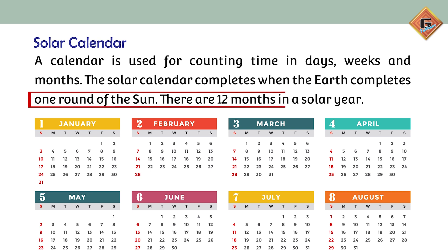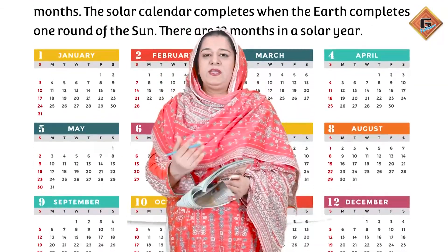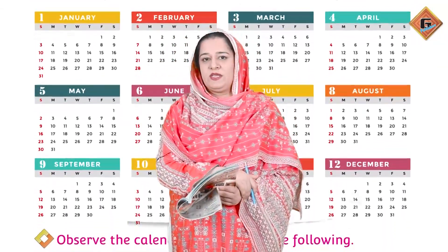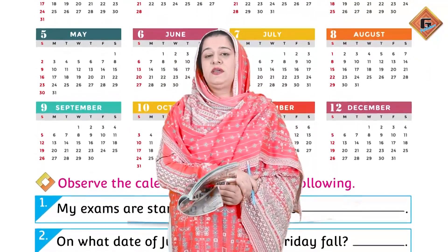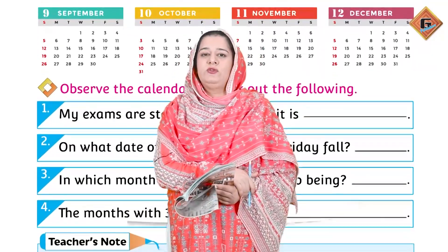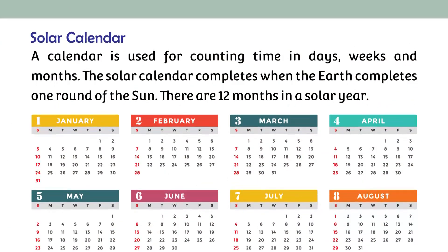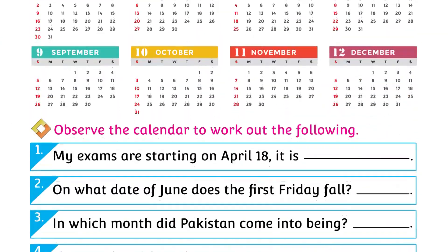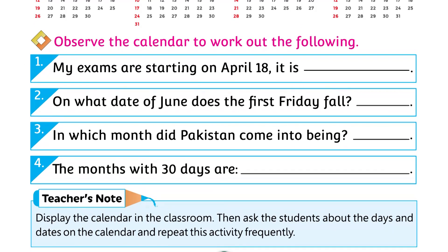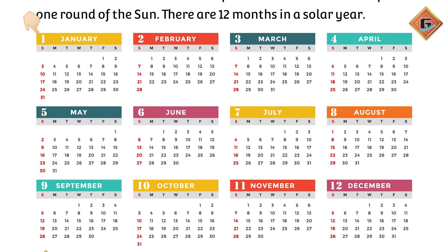There are 12 months in a solar year. Solar calendar ka direct link hai aapke Sun ki movement ke saath. Hamari Earth Sun ke gird orbit karti hai — hamari zameen jo hai Sun ke gird chakkar lagati hai, gardish karti hai. Woh orbit 365 days mein taqriban complete karti hai. Aur un 365 days ki movement ke mutabiq jo aapke days, weeks aur months ko divide kiya gaya hai, jis calendar mein, use hum solar calendar kehte hain. Is mein 12 months hain.